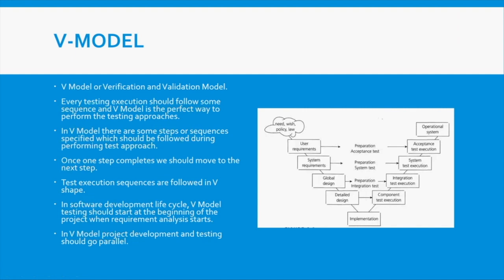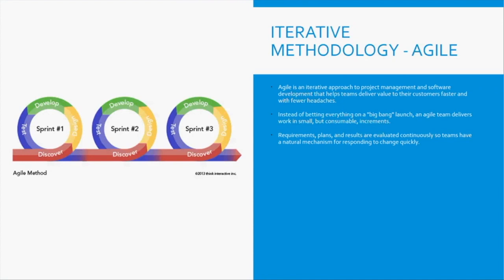Testing starts at the beginning of the project in V-model — but you're preparing documents, not executing tests. Before implementation there are requirements you can work upon: you can write test cases and perform test design. Your actual test execution starts from unit testing upwards. That's the V-model approach, which leads us to Agile.